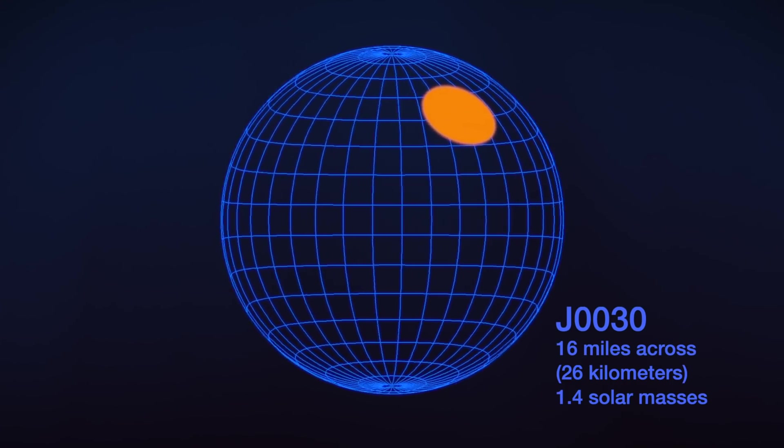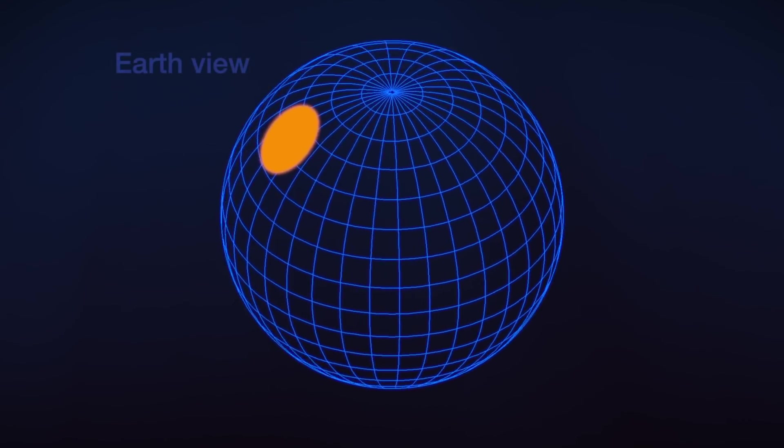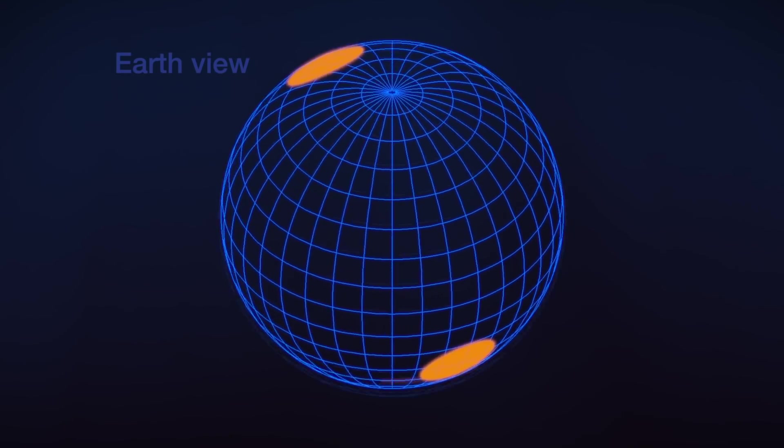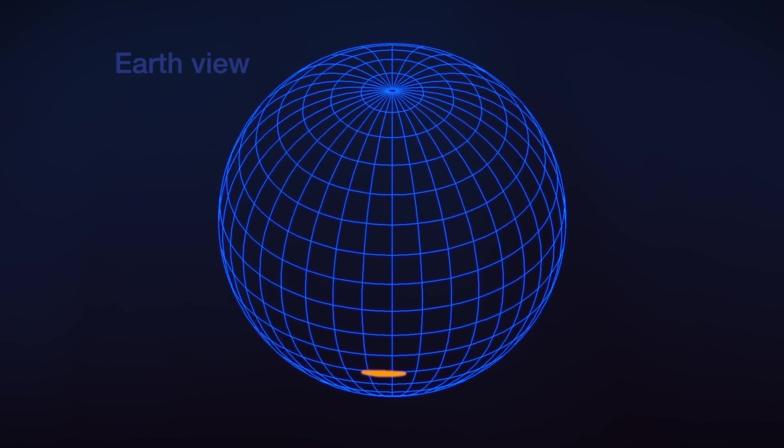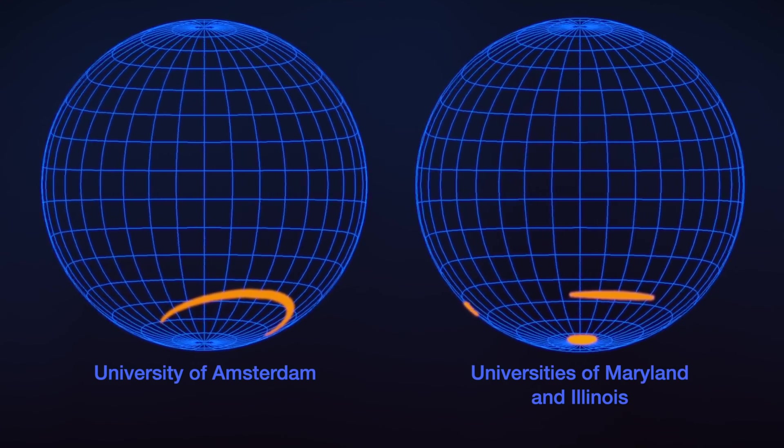The spots themselves don't match the textbook image, though. From Earth, we look down onto J0030's northern hemisphere. Both teams say there are no spots there at all. Contrary to the simple magnetic dipole model, all the spots appear in the southern hemisphere and are not necessarily in shapes we might expect.